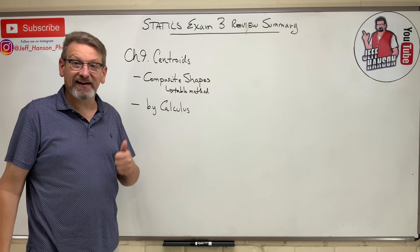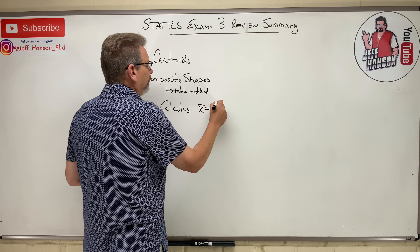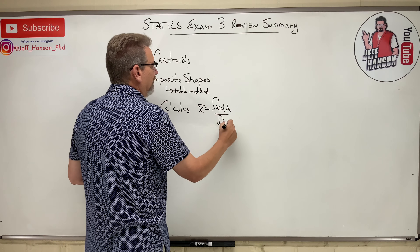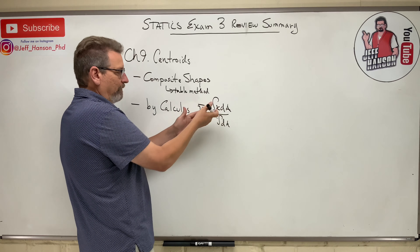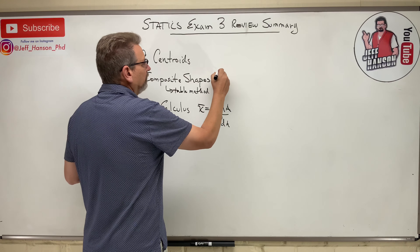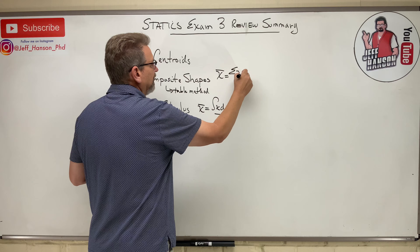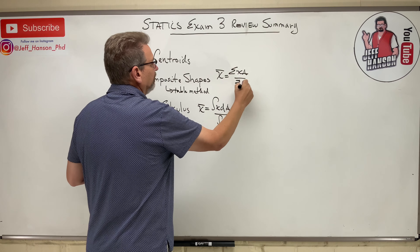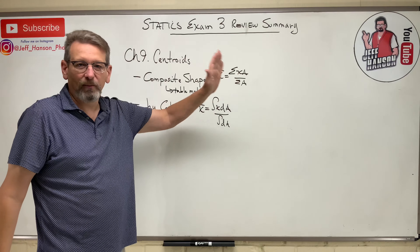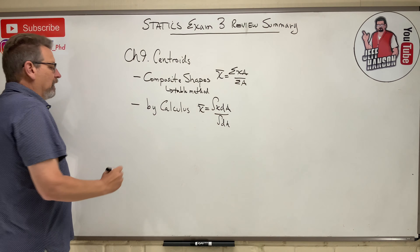For centroids by calculus, x-bar is equal to the integral of x dA over the integral of dA. You can put y-bar or z-bar in there as well. For composite shapes, x-bar equals the sum of the x·A's over the sum of the A's. You can substitute A for volume, length, weight, or mass — whatever applies.